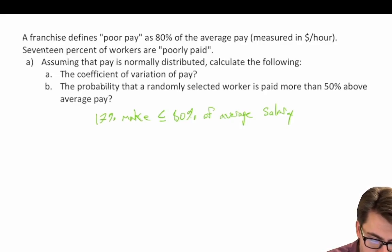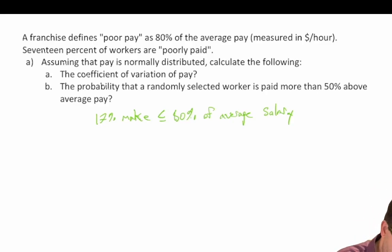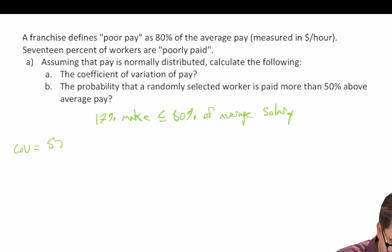The coefficient of variation of pay — and we remember that the coefficient of variation is simply equal to the standard deviation divided by the expected value.